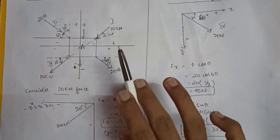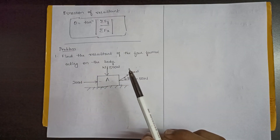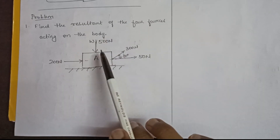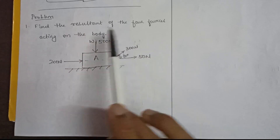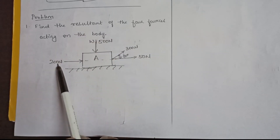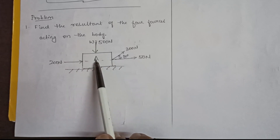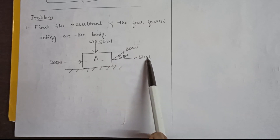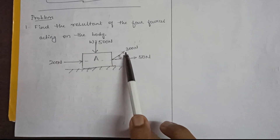Now let's look at a complete problem on resolution of forces to find the resultant. We'll discuss more problems in future videos. The problem: find the resultant of four forces acting on a body — a 200 N force acting horizontally, a 500 N force acting vertically downwards, a 300 N force acting at an angle of 30 degrees, and a 50 N force acting horizontally to the right.